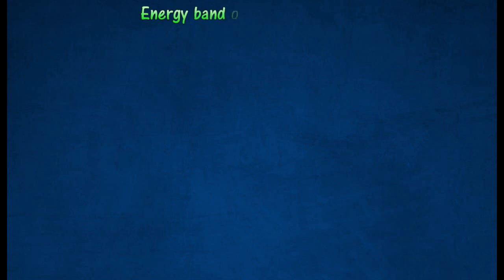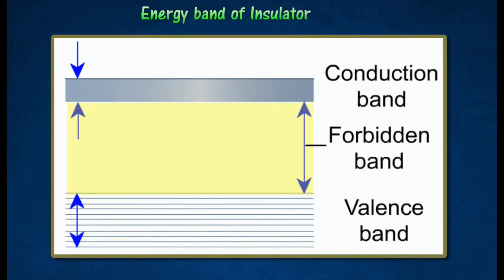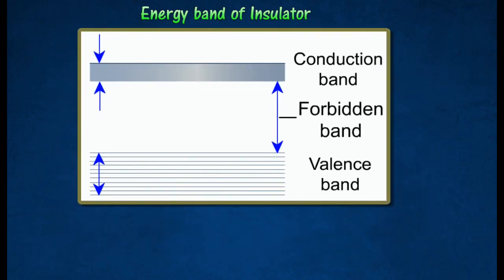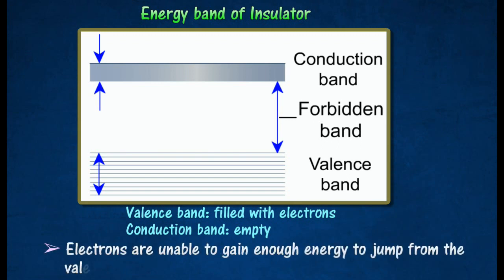In insulators, the conduction band and the valence band are separated by a band gap called the forbidden gap. For an insulating material, the valence band is completely filled with electrons which are tightly bound to the atoms, but the conduction band is empty. The two energy bands are separated by a very wide forbidden gap. Therefore, the electrons are unable to gain enough energy to jump from the valence band to the conduction band.